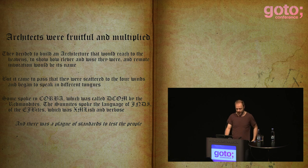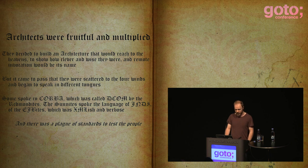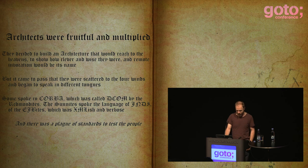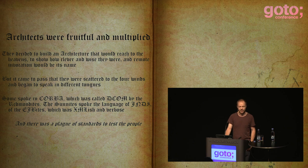The architects were fruitful and multiplied. They decided to build an architecture that would reach to the heavens to show how clever and wise they were, and remote invocation would be its name. And it came to pass, they were scattered to the four winds and began to speak in different tongues. Some spoke in CORBA, which was called DCOM by the Redmondites. The Sun-ites spoke the language of JNDI, of the EJB-ites, which was XML-ish and verbose. And there was a plague of standards to test the people.